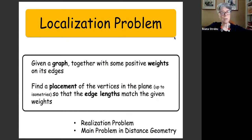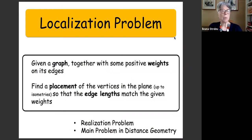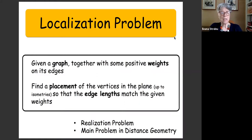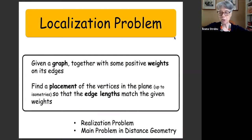The localization problem is of course an abstraction of this and has many applications besides molecular structure determination. The terminology comes mostly from the recent approach with sensor networks — localizing various objects in a space where some anchors are given. Abstractly speaking, we have a graph and some positive weights on its edges, and the problem is to find the placement of the vertices in the plane up to isometries so that the edge lengths match the given weights. It's sometimes called the realization problem, and it is the main problem in the beautiful area of distance geometry.